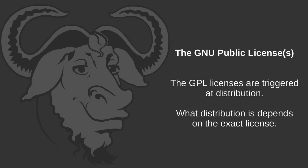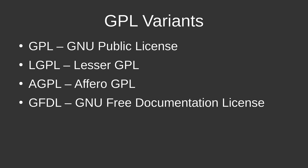The GNU licenses are triggered by distribution, and there are a number of different GNU licenses where the distribution trigger varies a bit between them. It's important to recognize that the GNU license doesn't really apply when you're just having the code at home — it's when you actually distribute it to a neighbor, user, or fellow developer. Basically there are four variants of the GPL: the GPL itself, which is a strong copyleft license, and the LGPL, which is the Lesser or Library GPL.